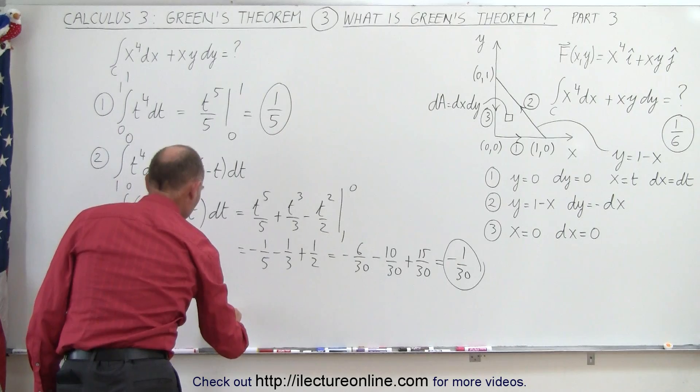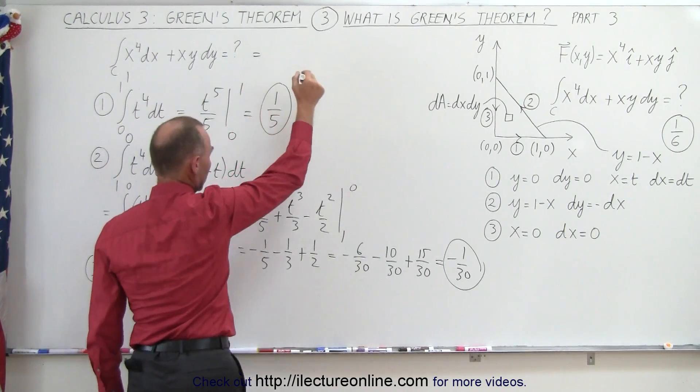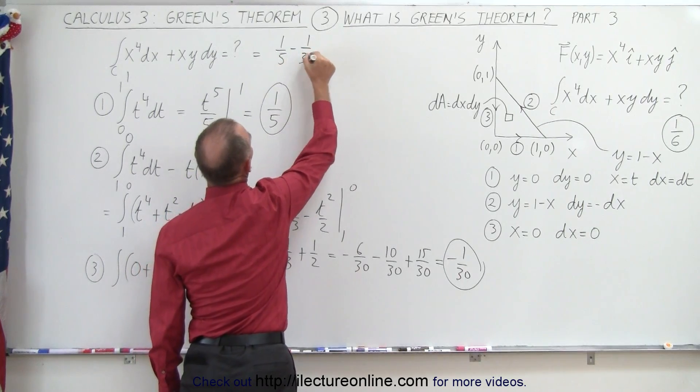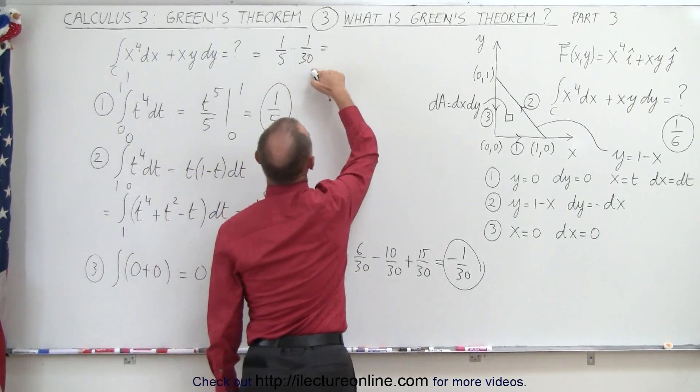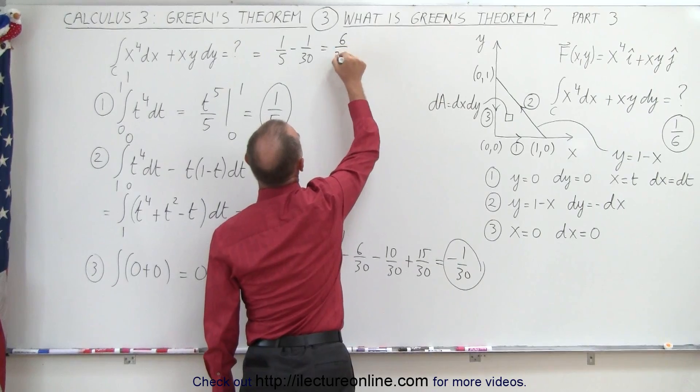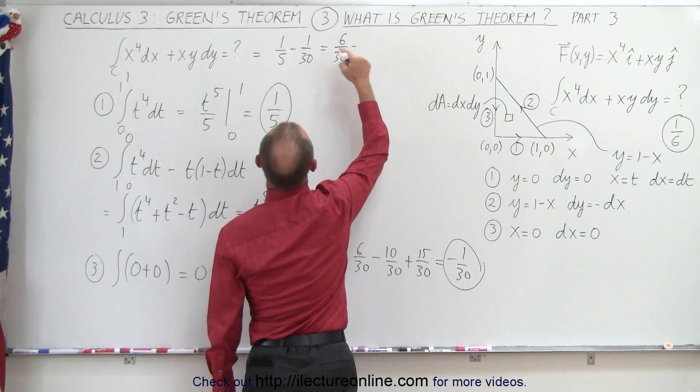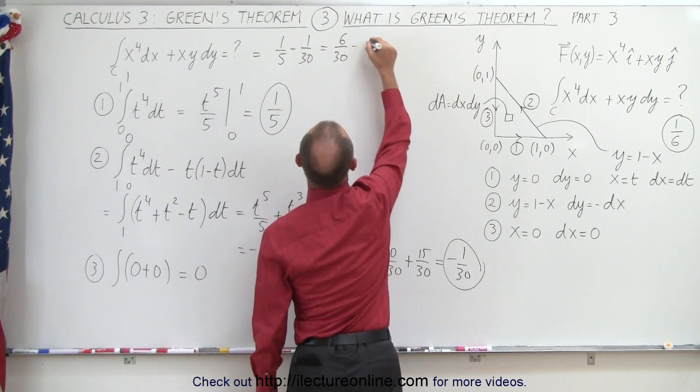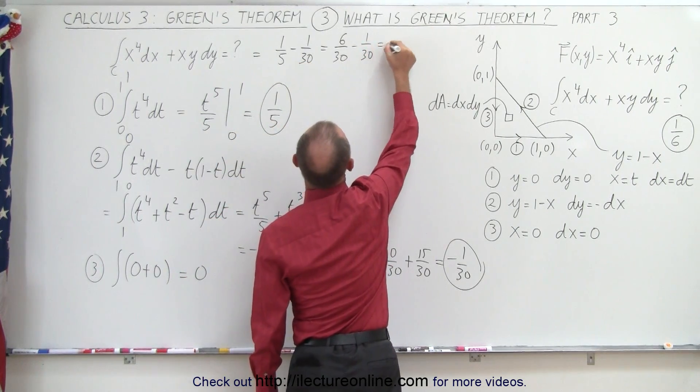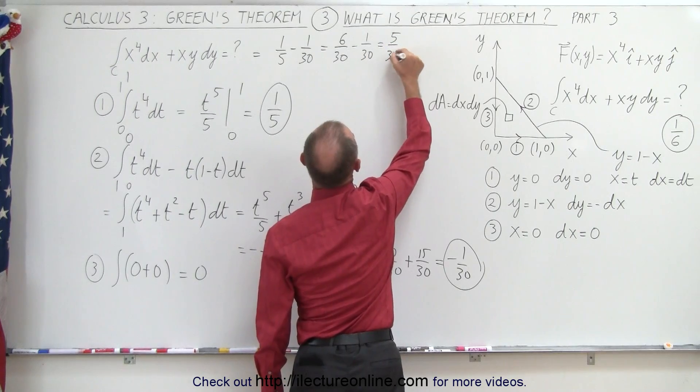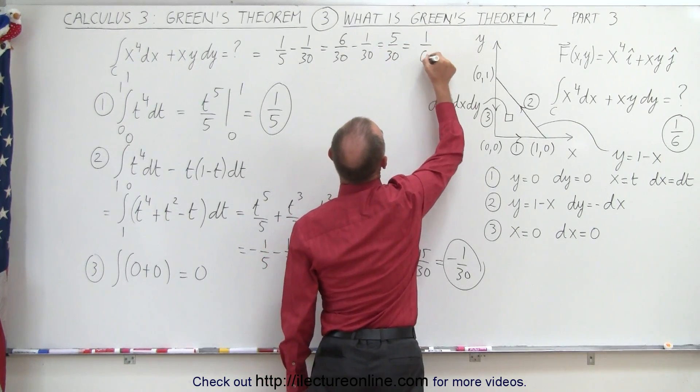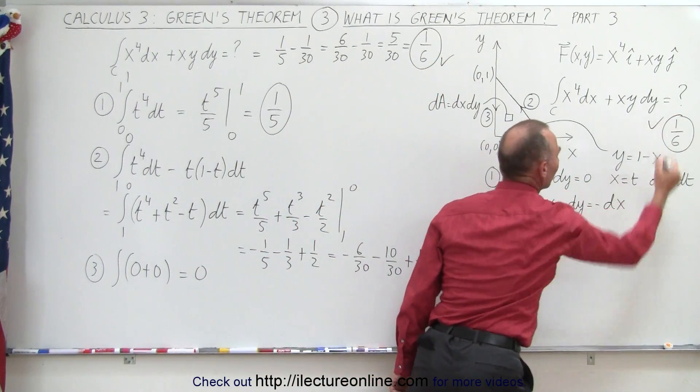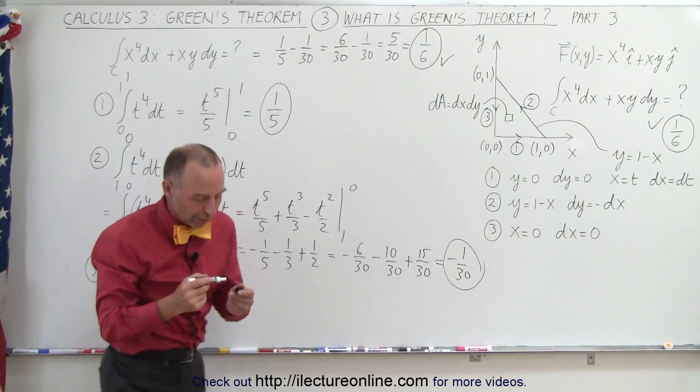So that means the integral here is going to be equal to 1 fifth minus 1 30th, common denominator is 30, so it would be 6 30th minus 1 30th, which is 5 30th, which is equal to 1 over 6, and notice we get the very same result that we got on the previous video using Green's theorem.